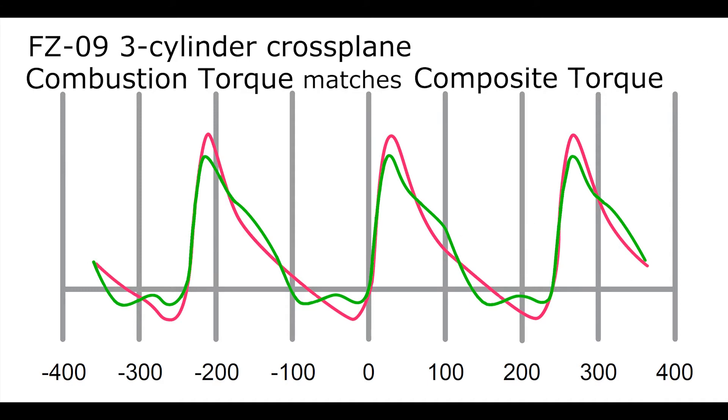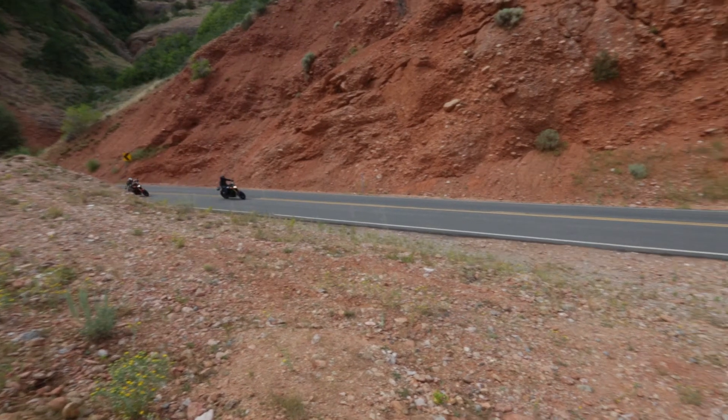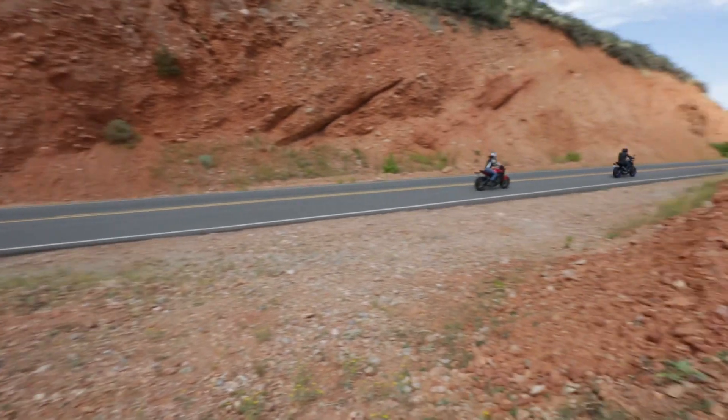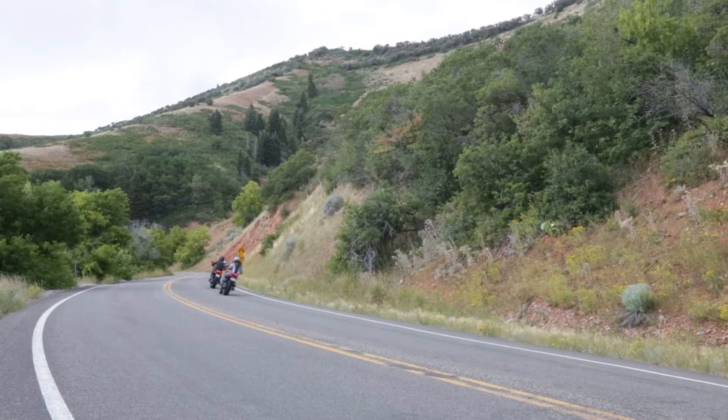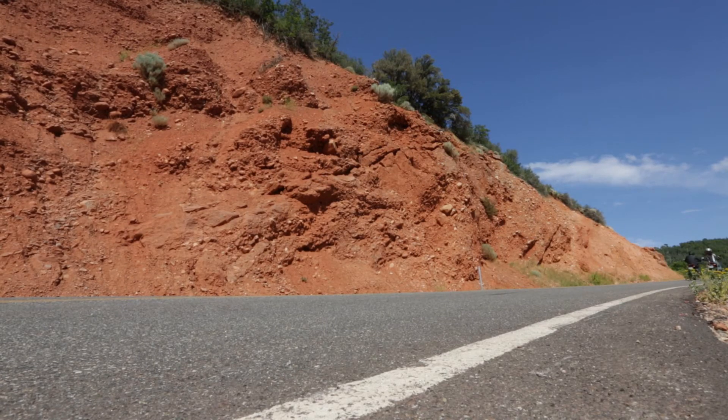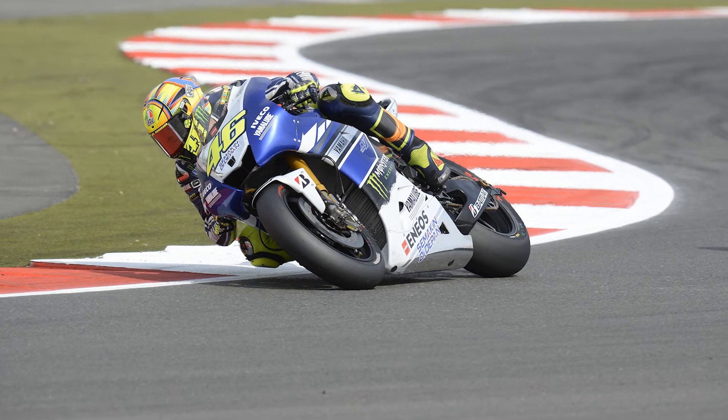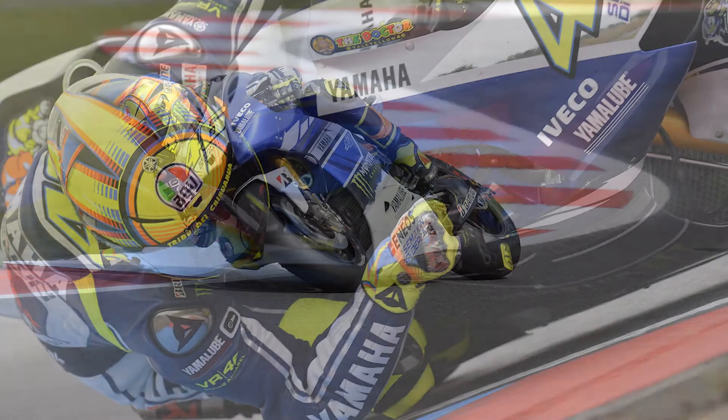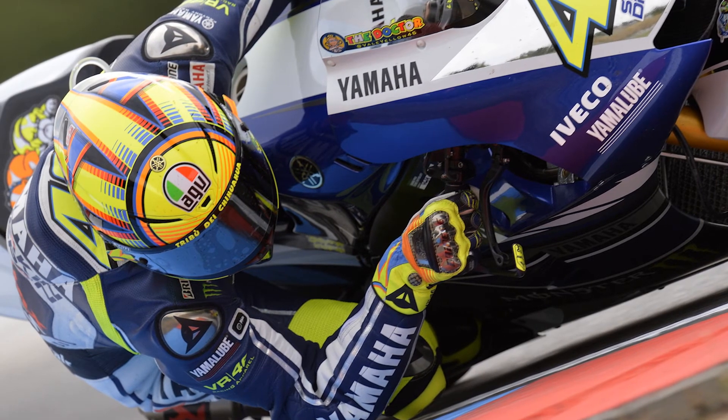It's this close match of the combustion and the composite torque that produces that hard-pulling sensation you feel when you accelerate and gives such great feedback to the rider that many people say it feels like their throttle hand is directly connected to the rear tire. And when Valentino Rossi first rode his Yamaha M1 MotoGP bike with the cross-plane crankshaft, he called the engine character sweet.